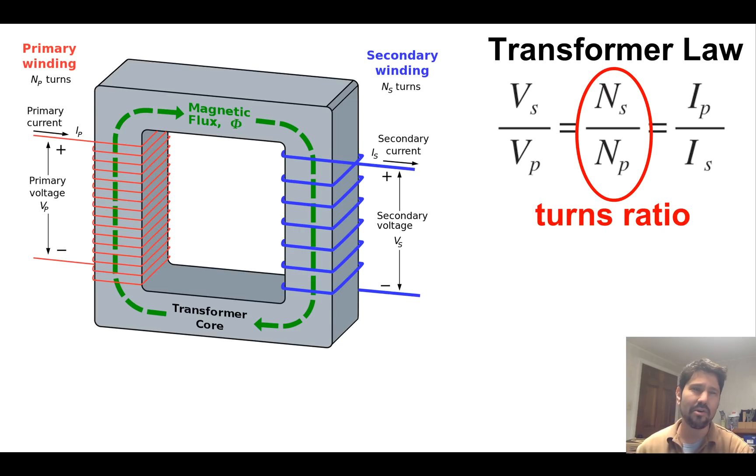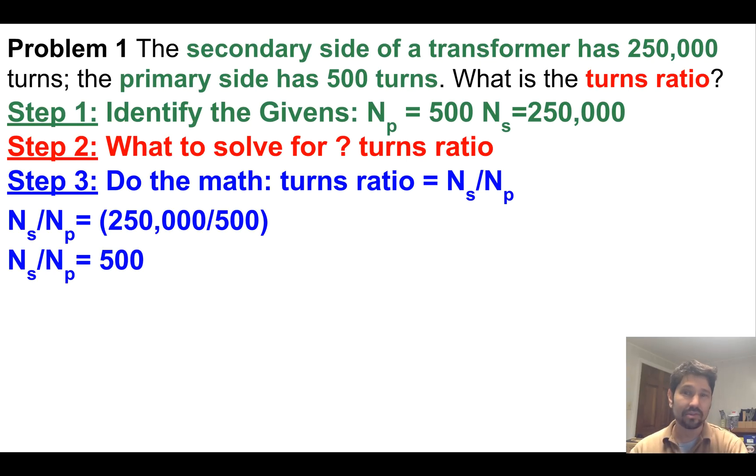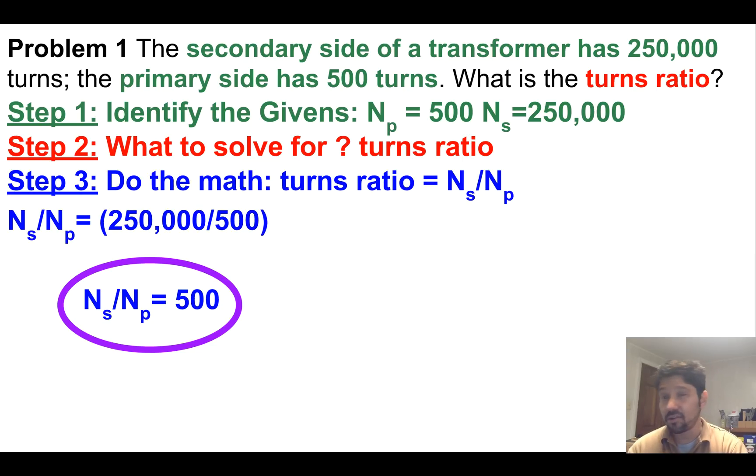The turns ratio is the number of turns in the coil on the secondary side divided by the number of turns in the coil on the primary side. NS over NP is our turns ratio, so we plug in 250,000 over 500 which equals 500. If it's got a turns ratio of 500, is it a step-up or step-down transformer? It must be a step-up transformer because it's going to step the voltage up. In step-down transformers we'll have turns ratios less than one, while step-up transformers have turns ratios much more than one.